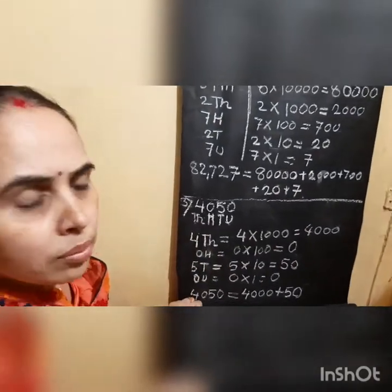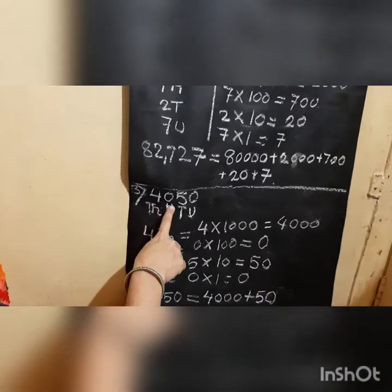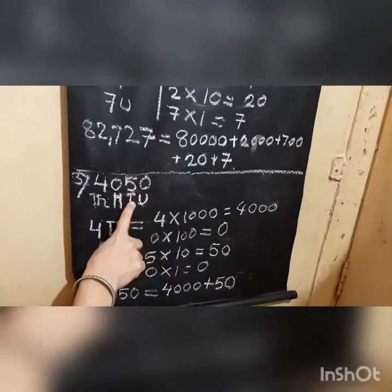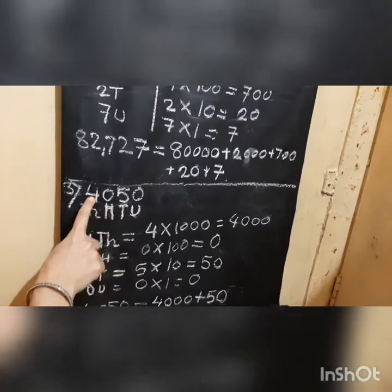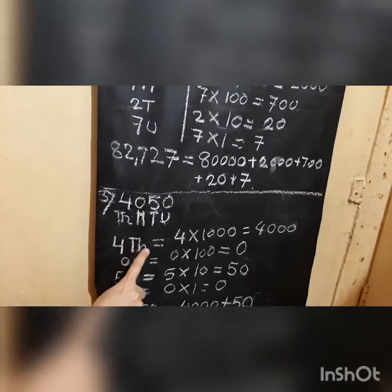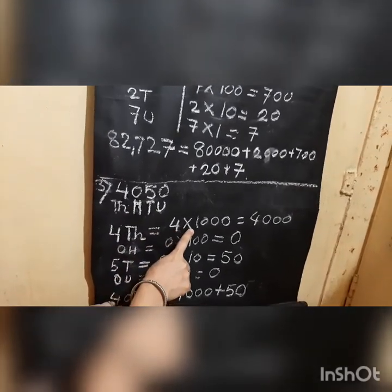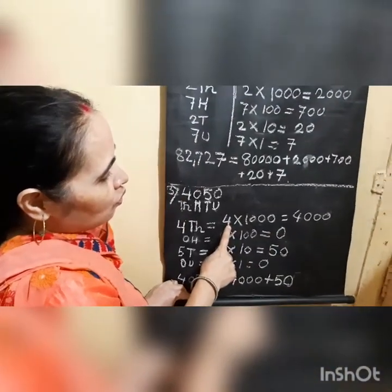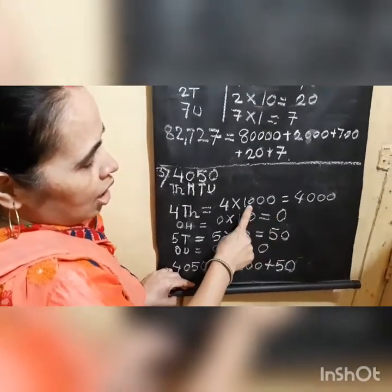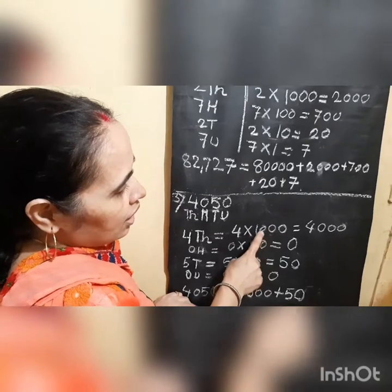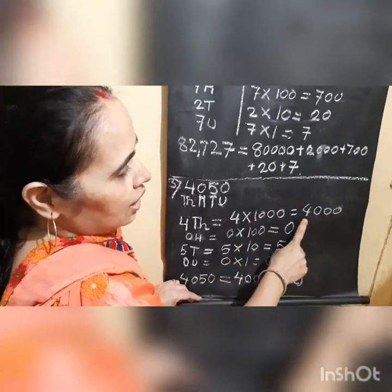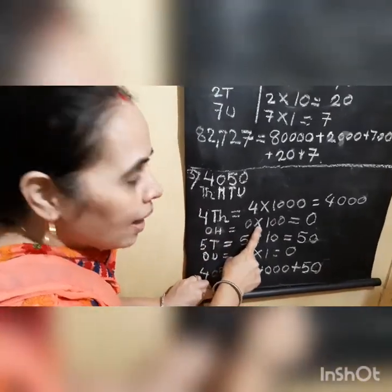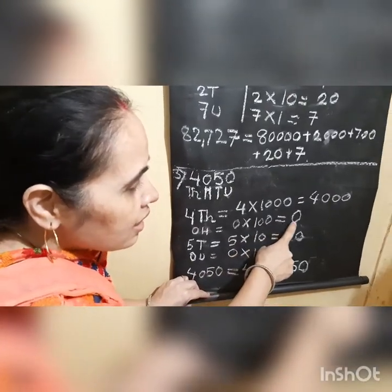Now let us see one more example. Third: 4,050. The place values are units, tens, hundreds, thousands. Four is in the thousands place: 4 multiplied by 1,000 equals 4,000. Zero is in the hundreds place: 0 multiplied by 100 equals 0. Any number multiplied by 0, you will get 0.